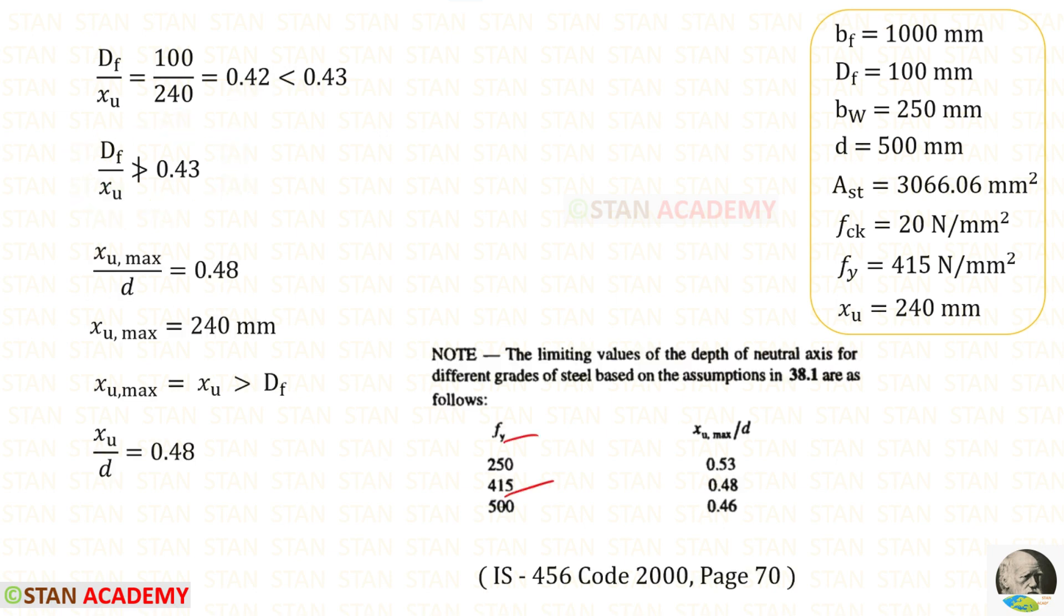For FE 415, XU max upon D is 0.48. In this way, for XU max, we will get 240 millimeters. For XU, we have got 240. For XU max also, we have got 240. So, both of them are having the same value. XU max and XU are greater than DF, which is 100. XU upon D will be also 0.48.